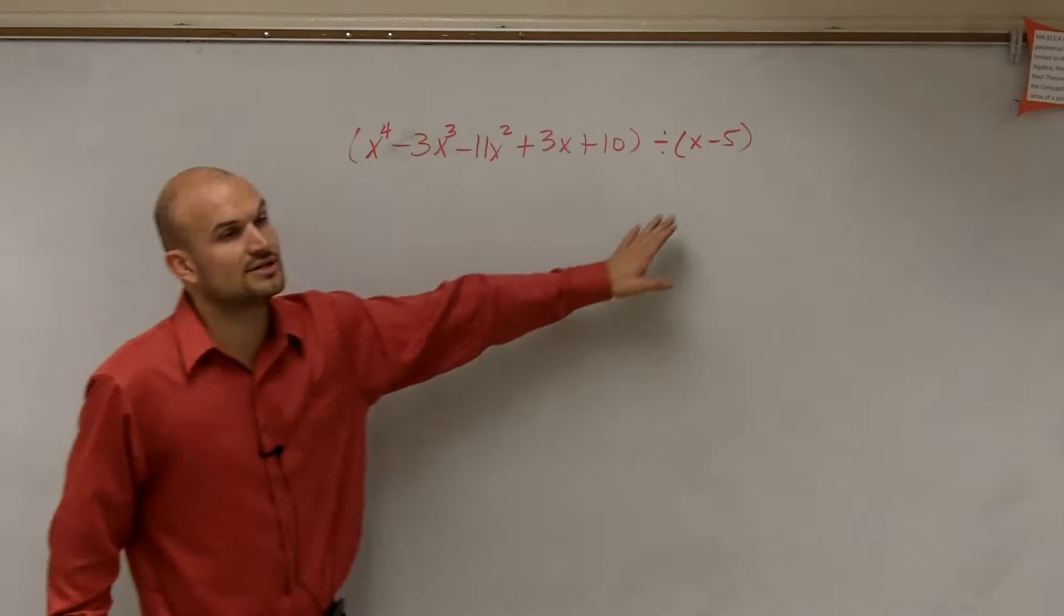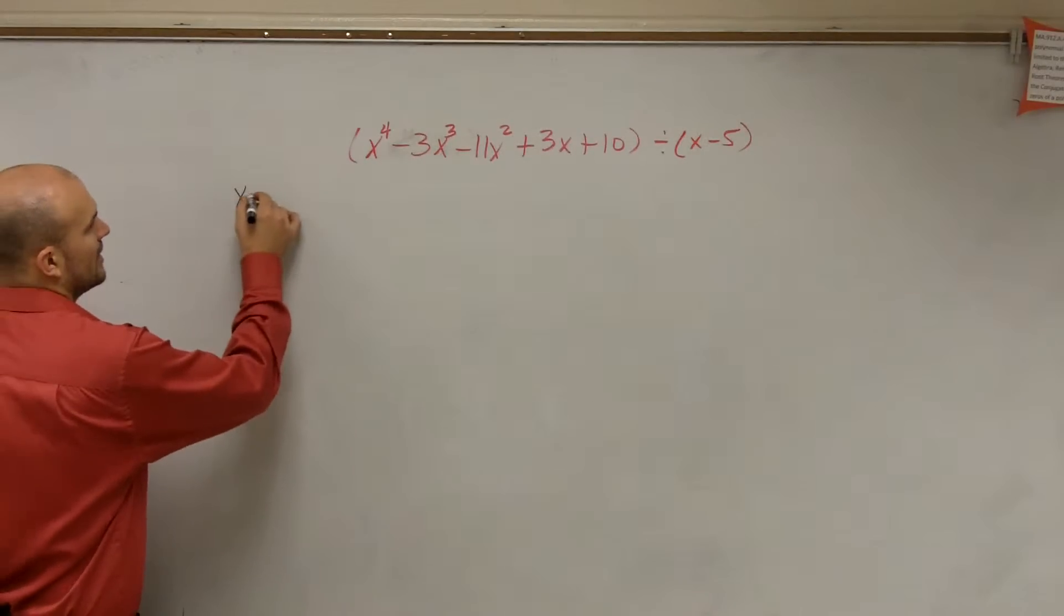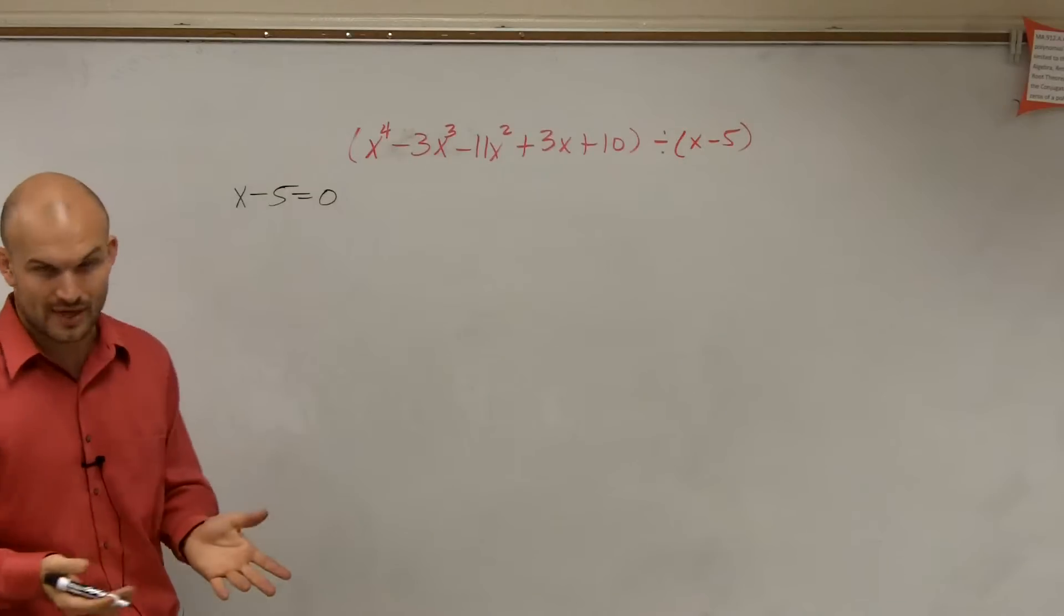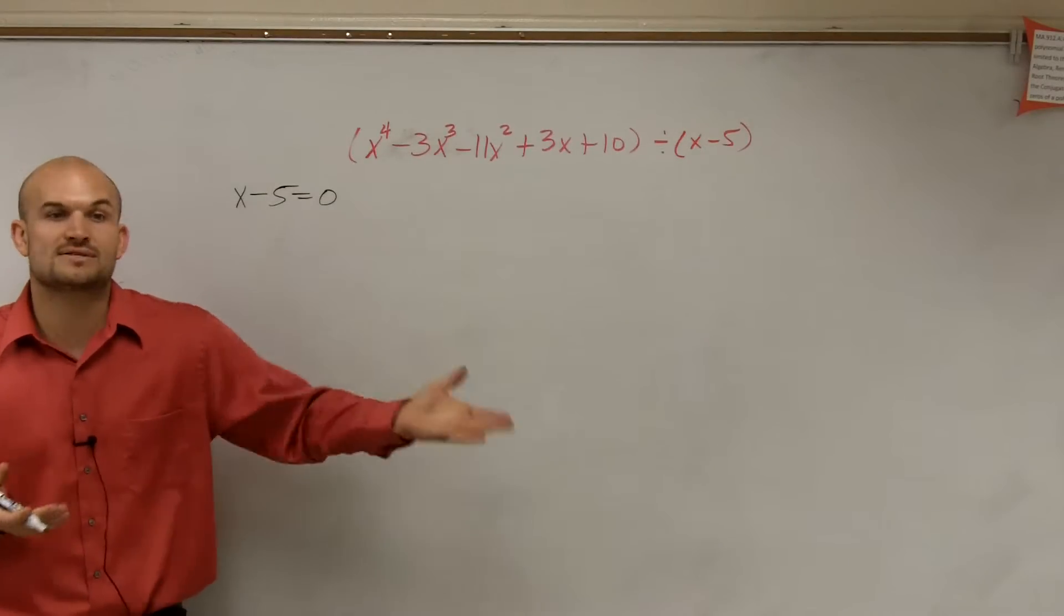Now remember, the first thing we do is we take our divisor and we set it equal to 0. And again, we're going to talk more about that a little bit later, why we do that. Sometimes you guys can say, oh, it's always the opposite.